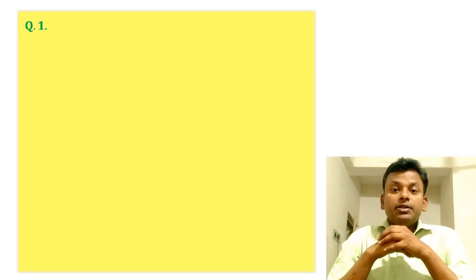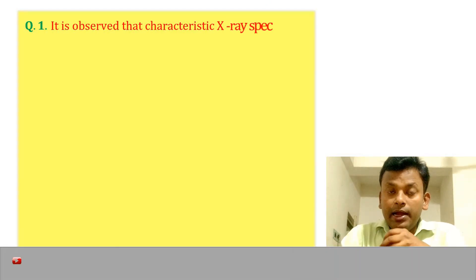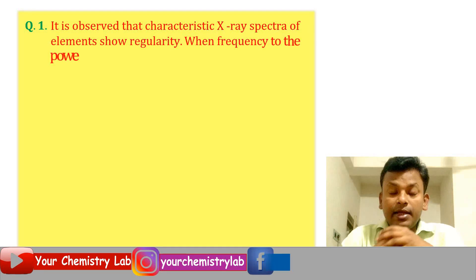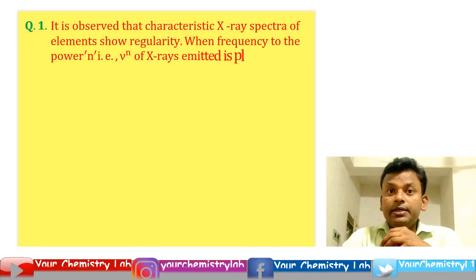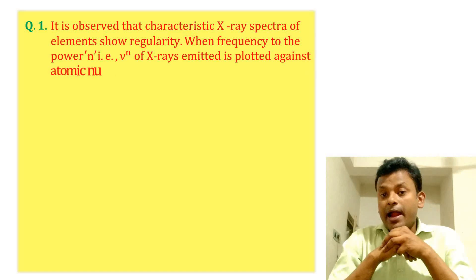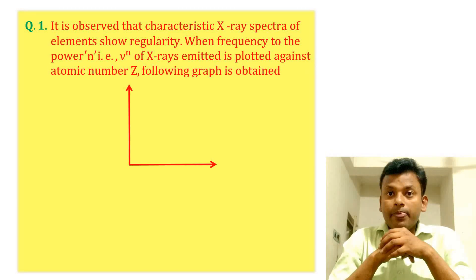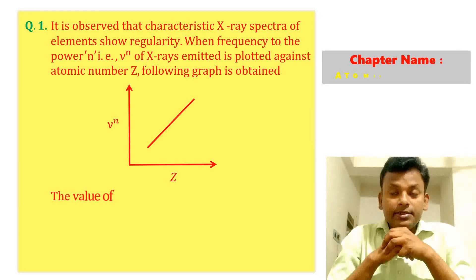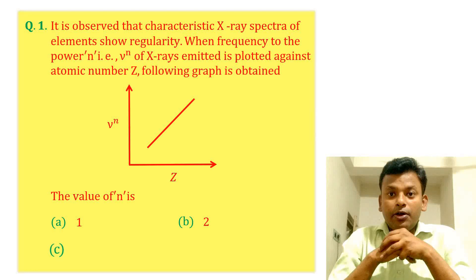Question 1: It is observed that characteristic X-ray spectra of elements are regular. When frequency to the power n, that is nu to the power n, of X-ray emitted is plotted against atomic number Z, the following graph is obtained. The value of n is: option A, option B, option C, option D.